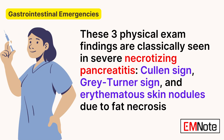These three physical exam findings are classically seen in severe necrotizing pancreatitis: Cullen's sign, Gray-Turner's sign, and erythematous skin nodules due to fat necrosis.